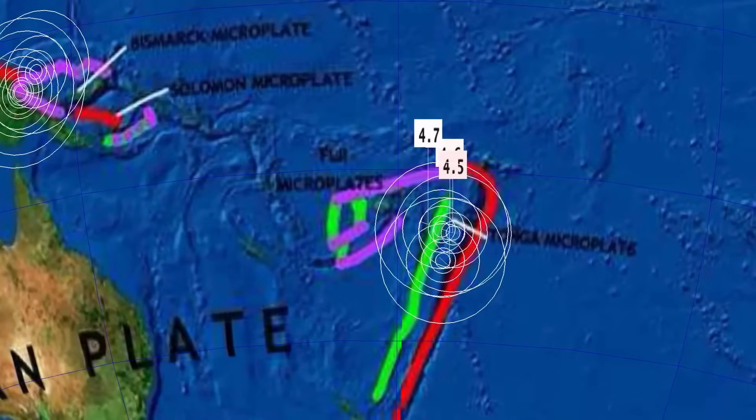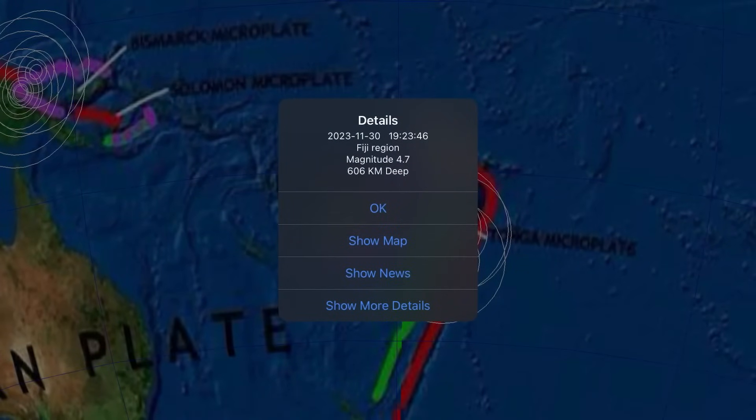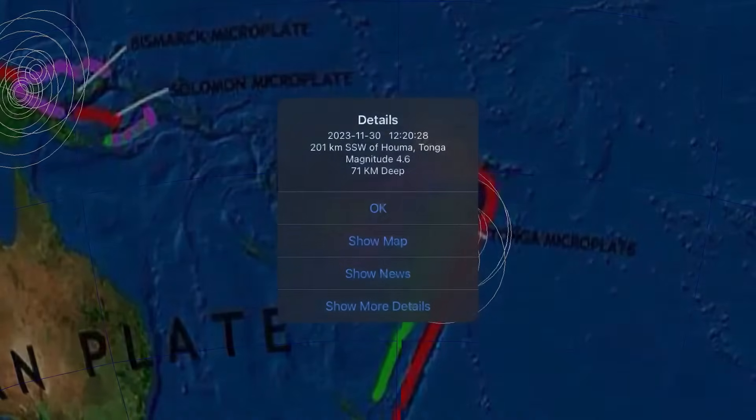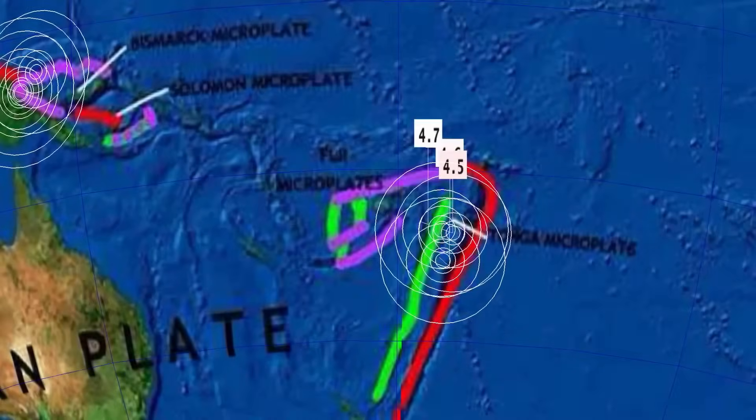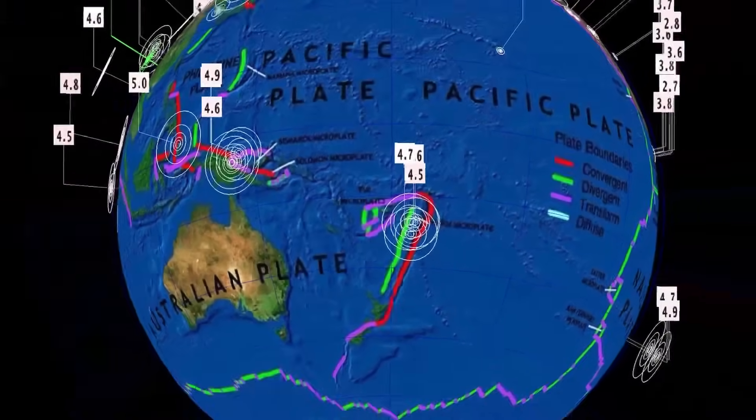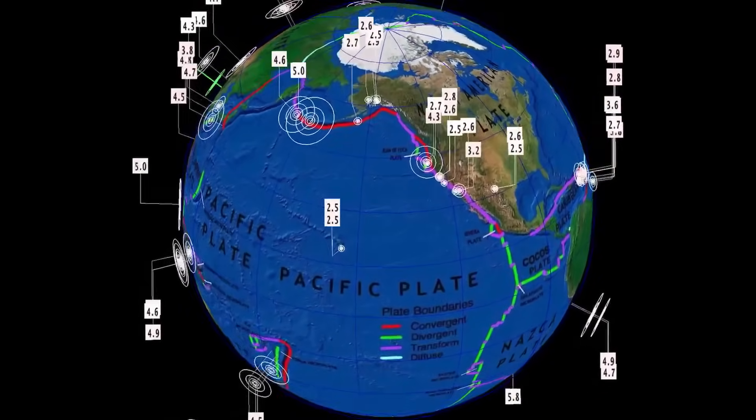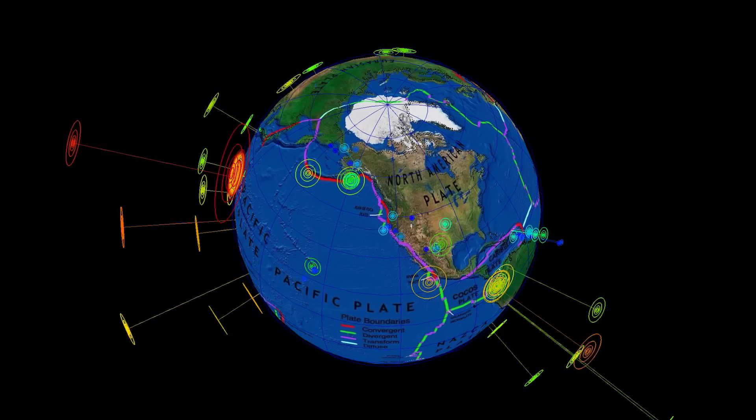Then we get to Fiji here, deep 606 kilometer depth earthquake, 4.7 magnitude. So yeah, watch for something larger and shallower to follow over the next 24 hours. This is a heads up earthquake warning video. We do have something coming.